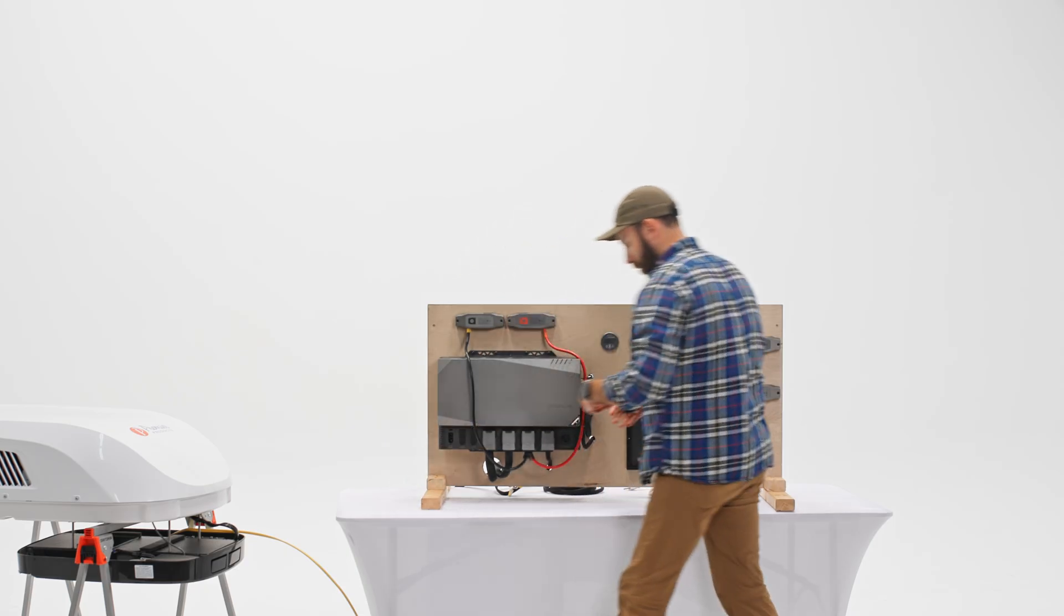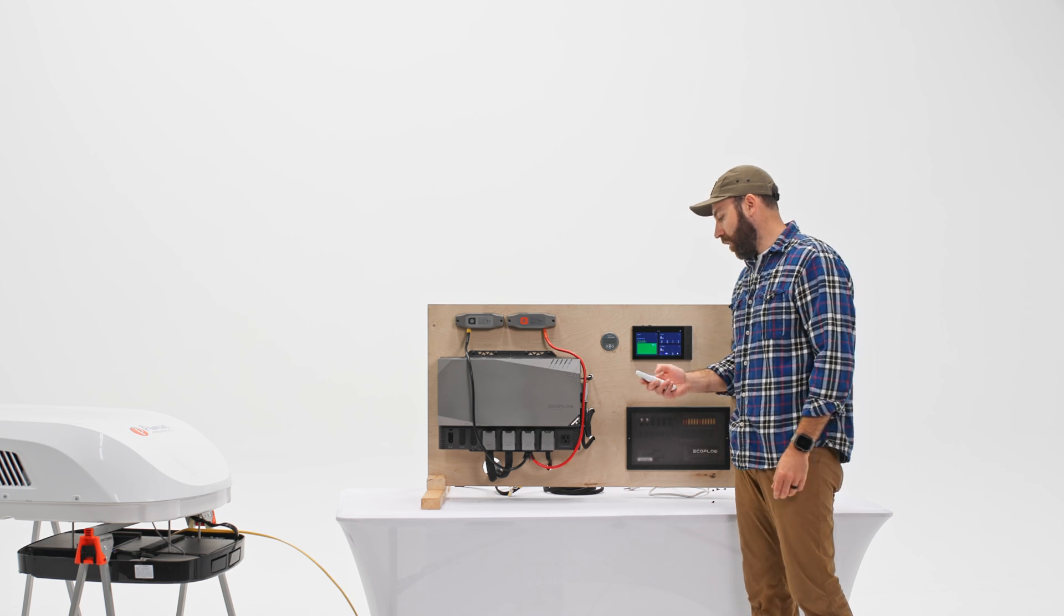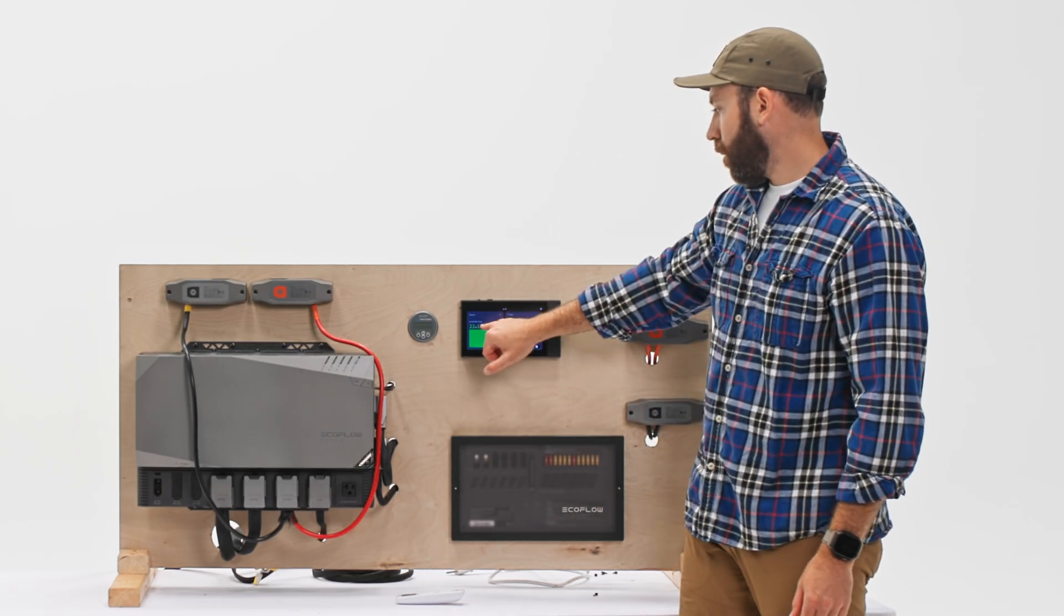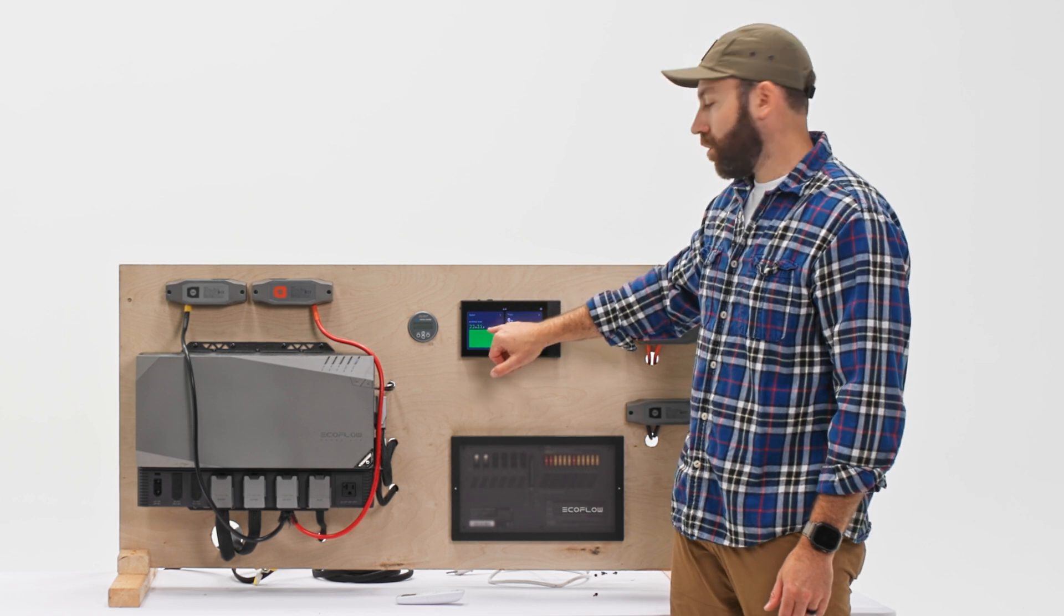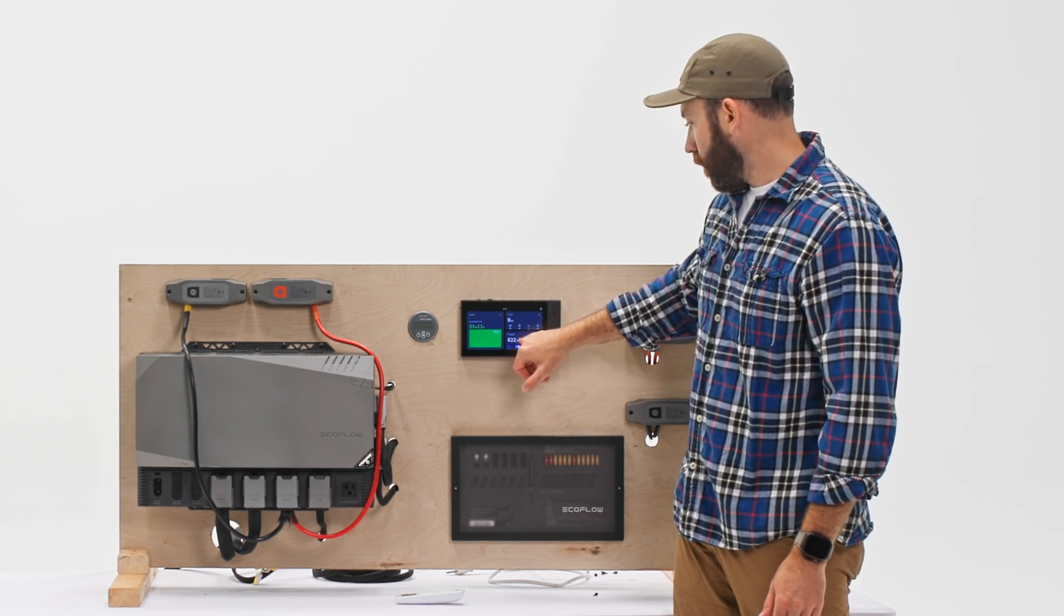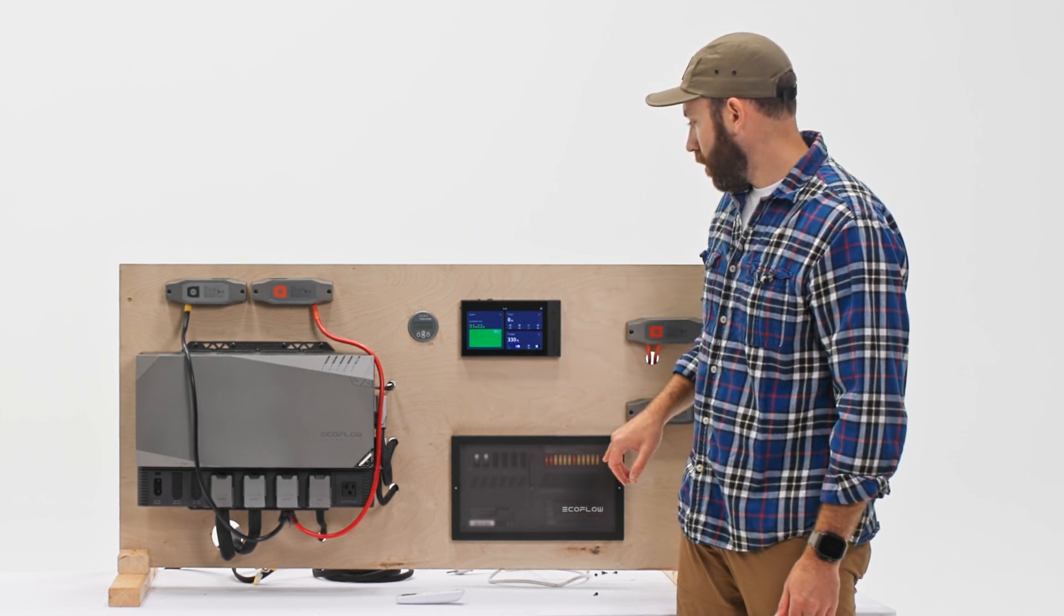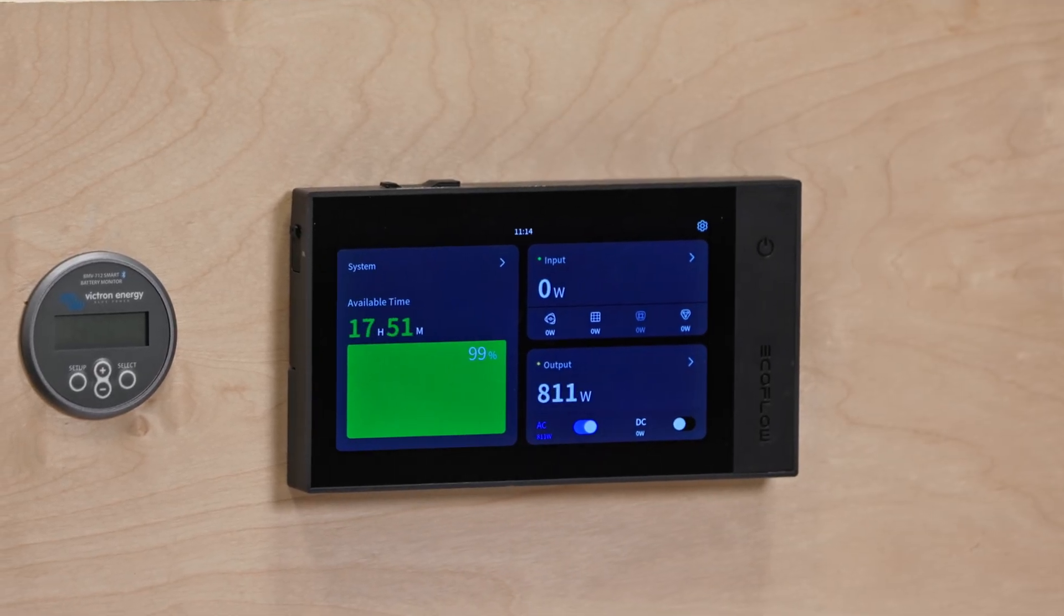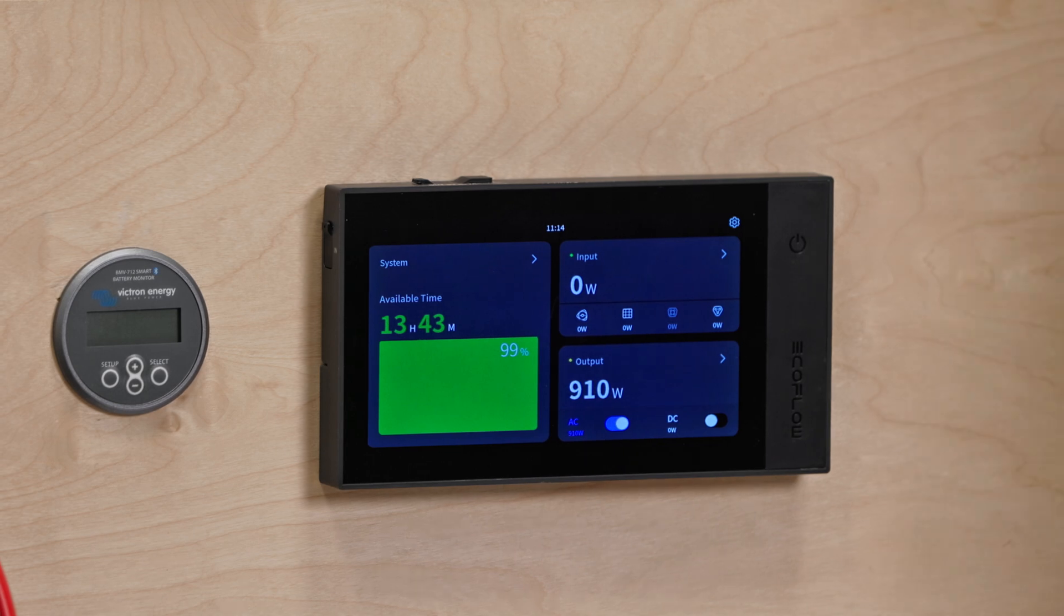We'll take our remote and we can power this unit on. We can start to get an idea of the power draw, which will show up on screen here, and our available time should adjust once this starts really starting to pull a current, pulling some power here. Let's get that temperature down, force it to run.